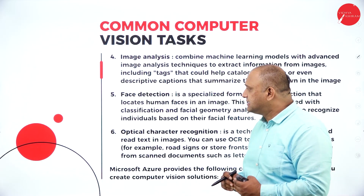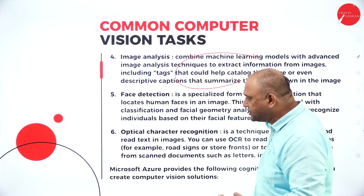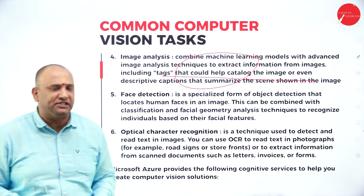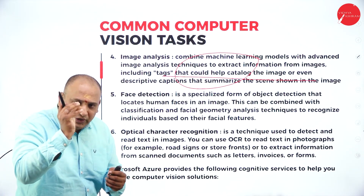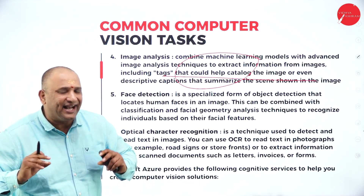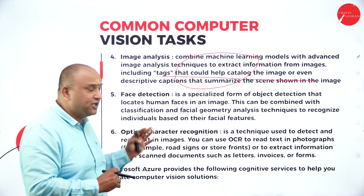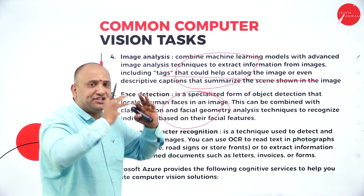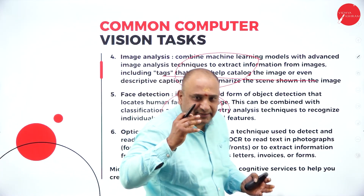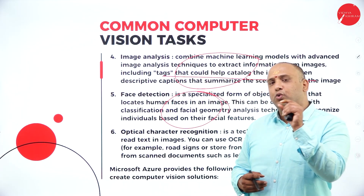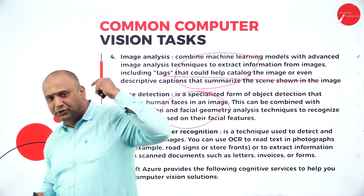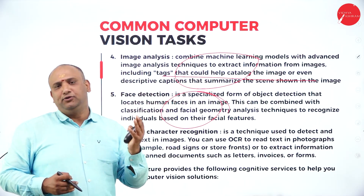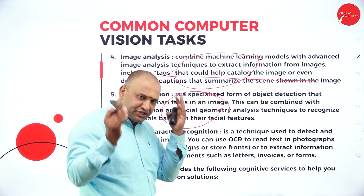Image analysis is the combination of image processing and extracting information, including tags, to produce a descriptive image — like the self-descriptions you see on Instagram reels that you can read and analyze. Face detection locates human faces in an image using facial geometry technique. As seen in spy or thriller movies, facial detection is used to detect absconding individuals, and it is one of the most important techniques used by worldwide agencies for understanding facial geometry.